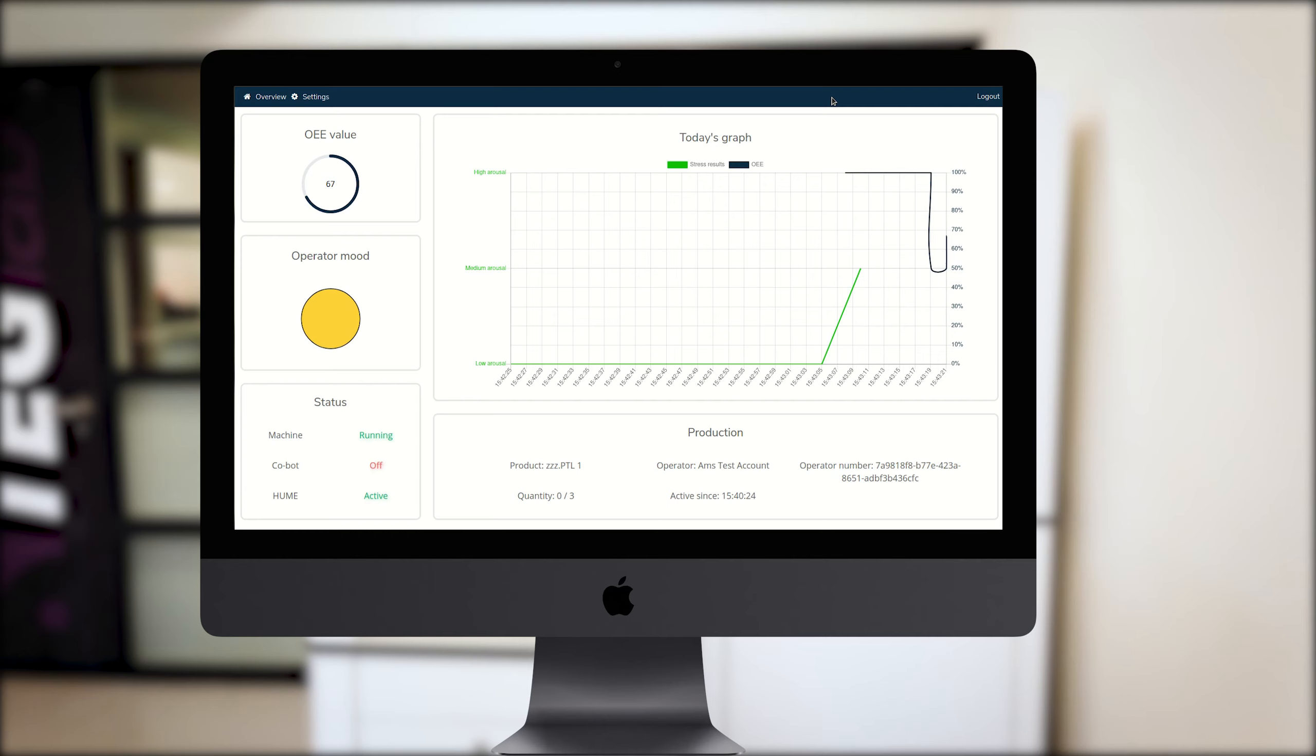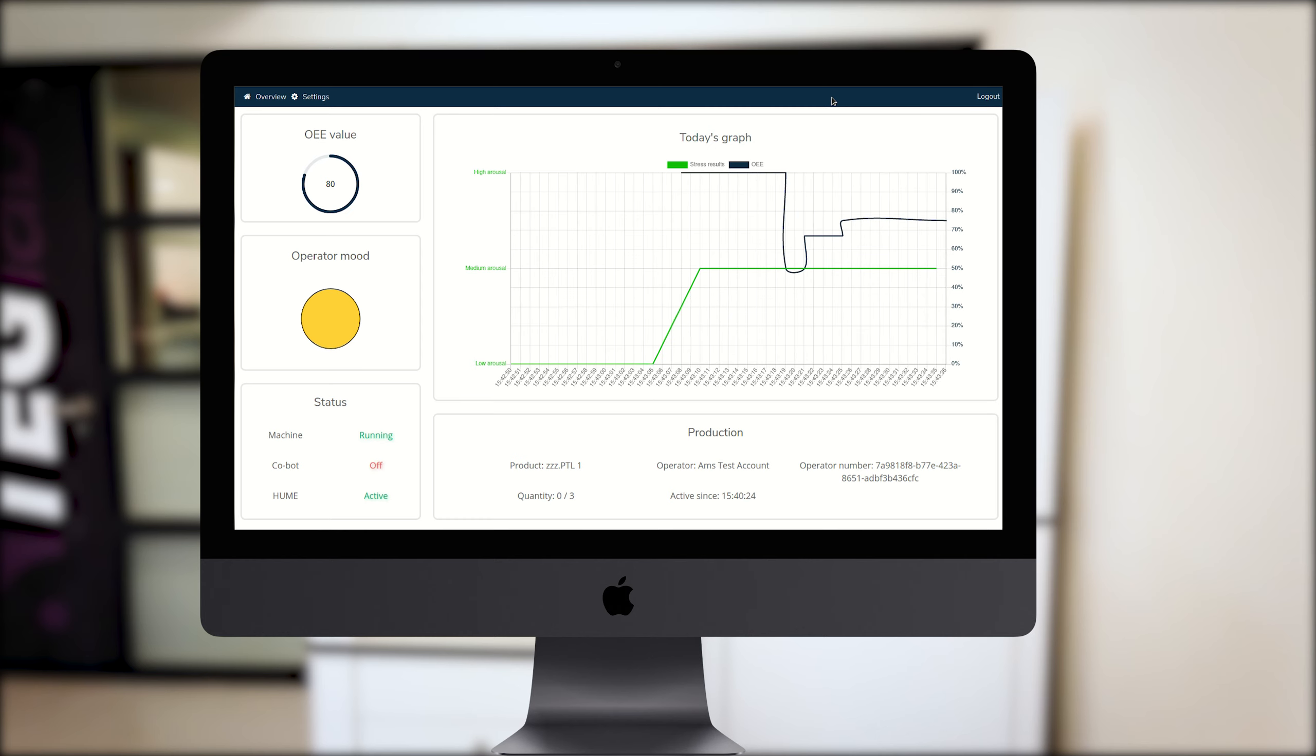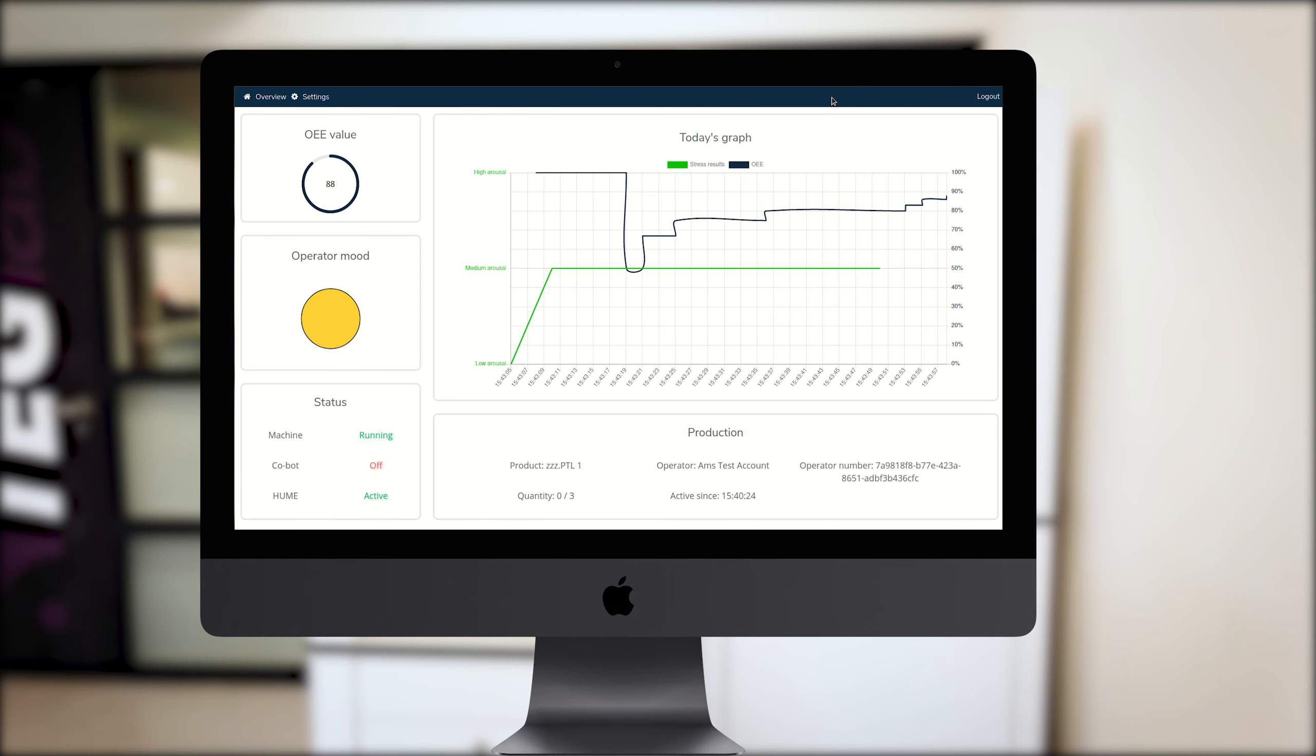The Hume system measures and visualizes the operator's stress in the dashboard alongside production performance metrics. As the operator's stress increases, the performance decrease can be seen in the dashboard. After a while, the performance increases again and the operator's mood changes to green.